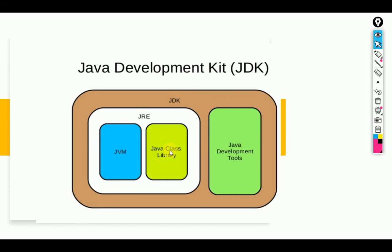Inside JRE there are two parts: Java Class Library and JVM. The Java Class Library provides a lot of built-in classes and interfaces we use to execute code. JVM is responsible for converting bytecode into machine-level format. The Java Development Tools provide supported libraries, classes, and interfaces. Together, all of this makes up the Java Development Kit.